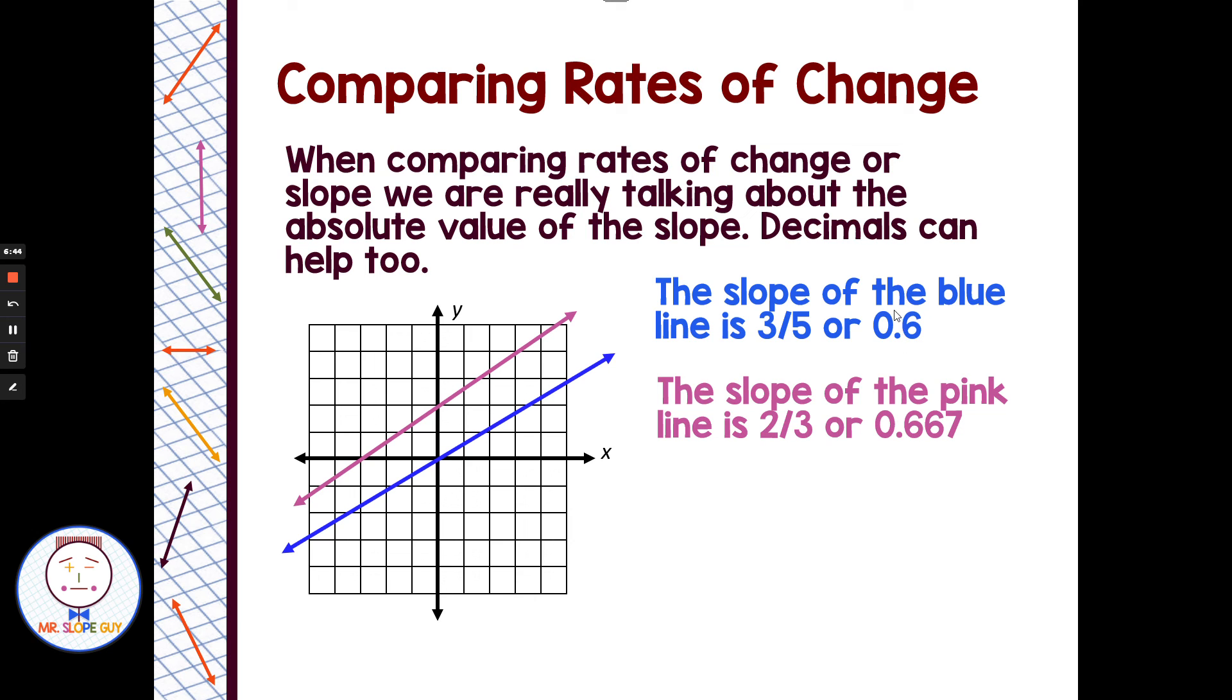If you think about this like money, the blue line would be like 60 cents. The pink line would be like 66 or 67 cents. So right away when we're in decimal form, it's a whole lot easier to tell. I look at these lines, they almost look parallel. That pink line is just a little bit steeper. And that little bit steeper shows up easiest in the decimal. Looking at 3 fifths and 2 thirds with different denominators, it's hard to tell which is larger. But once it's in decimal form, thinking about it like money, the pink one is just slightly steeper than the blue one.